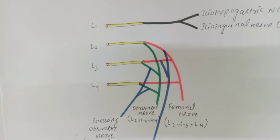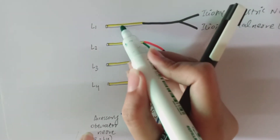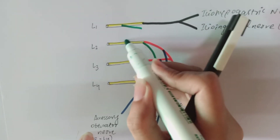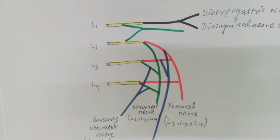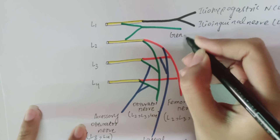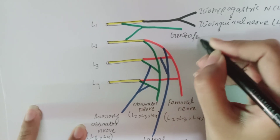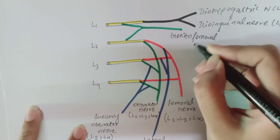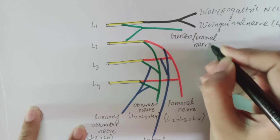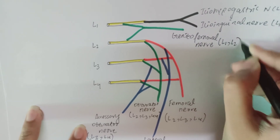From L1 and L2, there comes a nerve known as the genitofemoral nerve. Its root values are L1 and L2.